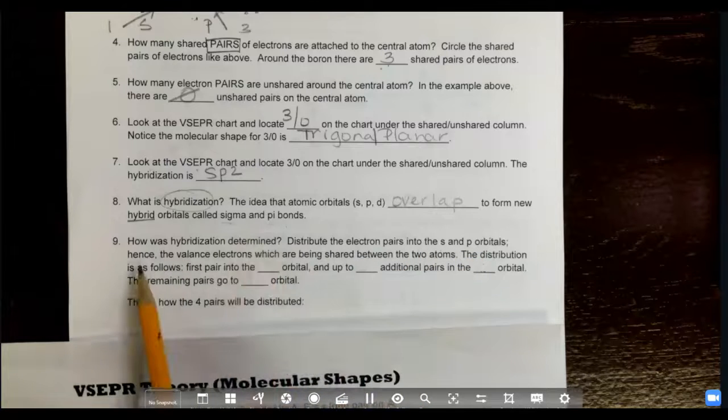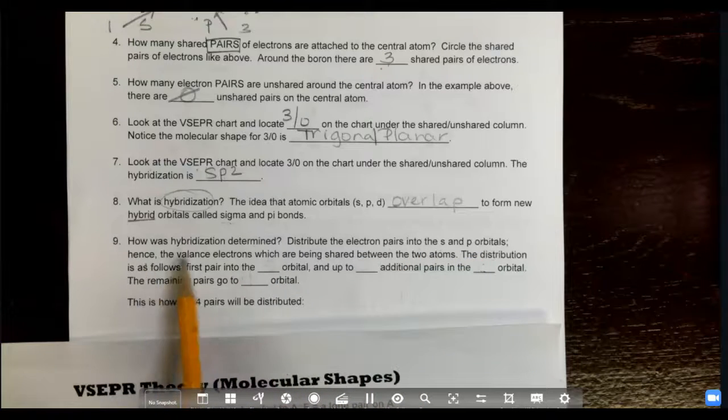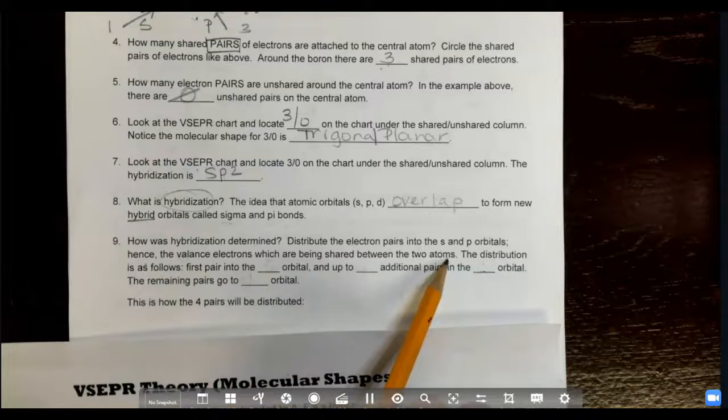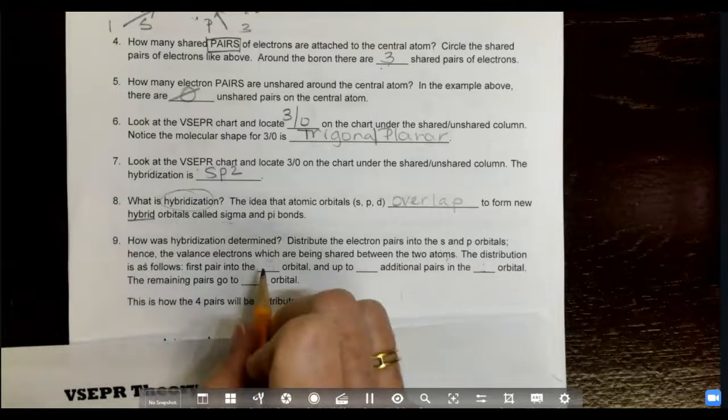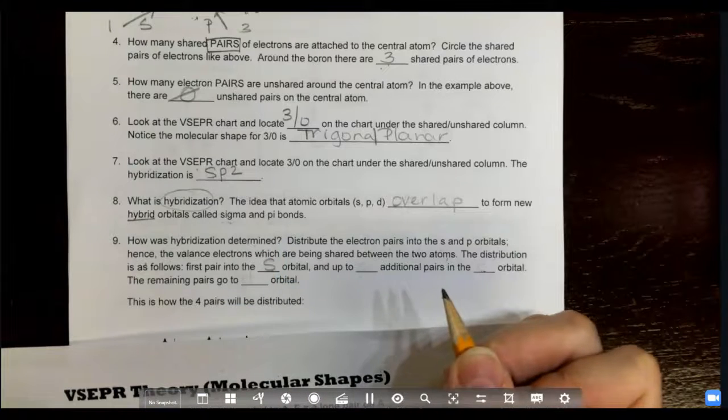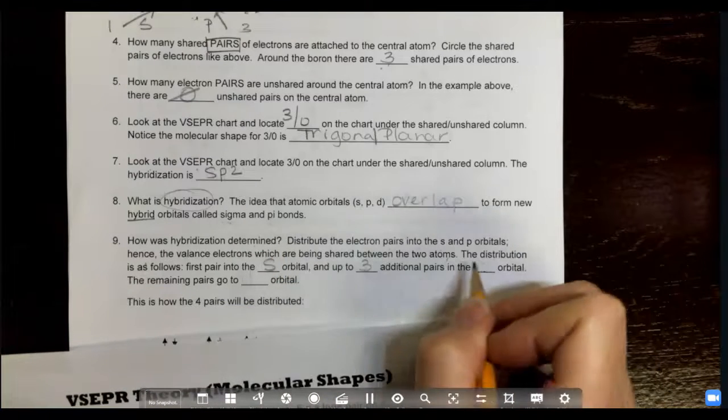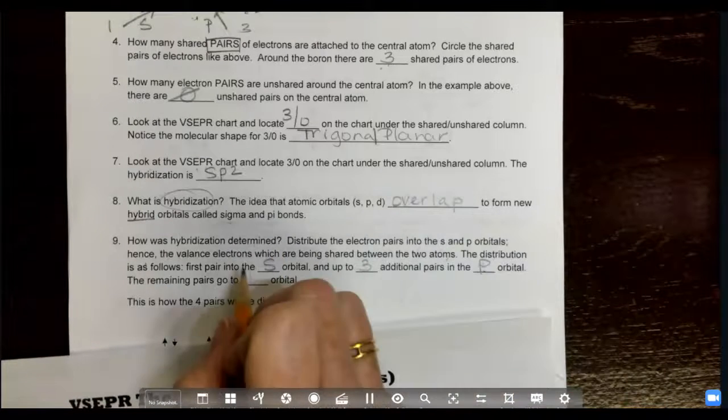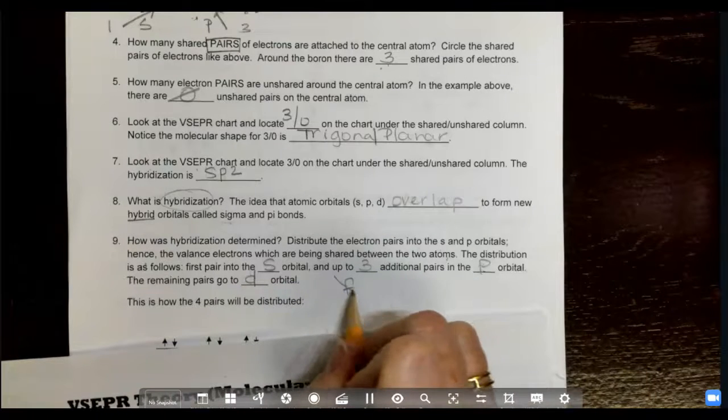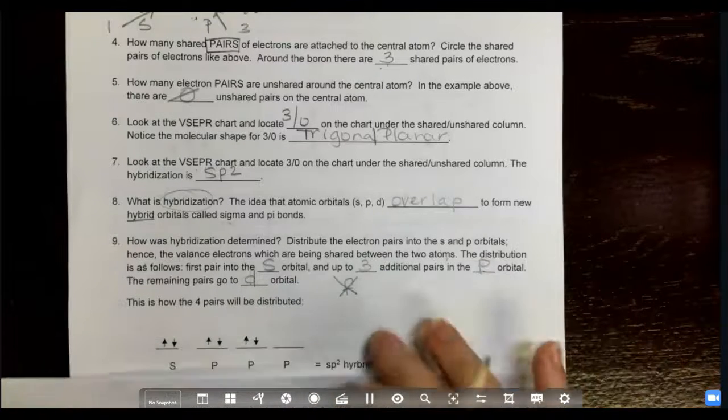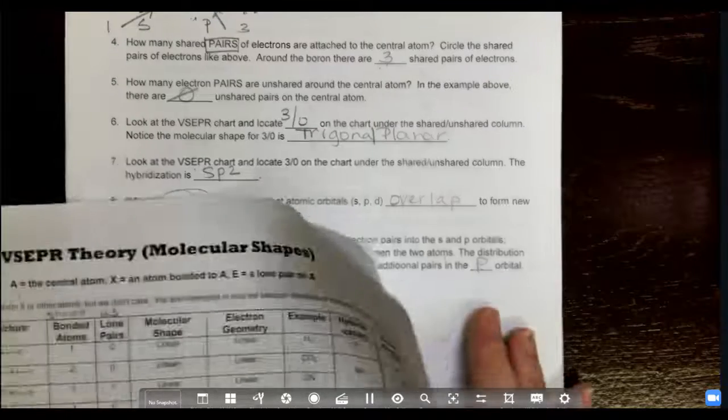So how do we determine this? We're going to distribute the electron pairs into the s and p orbitals. The valence electrons which are being shared between the atoms—the distribution goes as follows: the first pair goes in an s orbital, up to three additional pairs in the p, and the remaining pairs will go in a d. We will not talk about f orbitals. So let's go back to